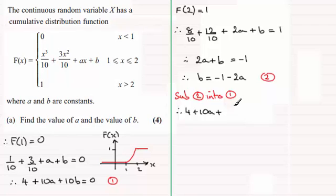And what does that give us? Well we're going to have 4 + 10a, so therefore 4 + 10a + 10 times b. So if I do 10 times b, that's 10 times -1, I'll just put it in brackets for the moment, and then that will equal 0.